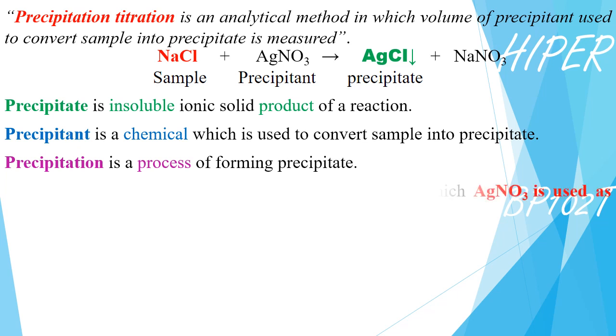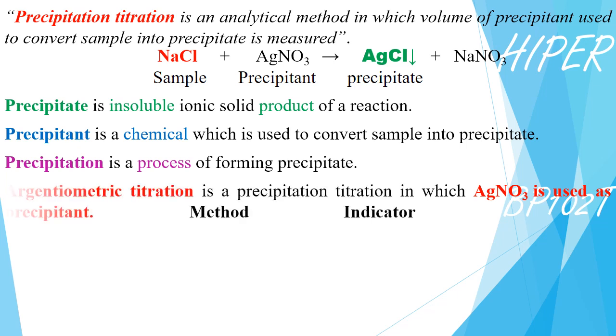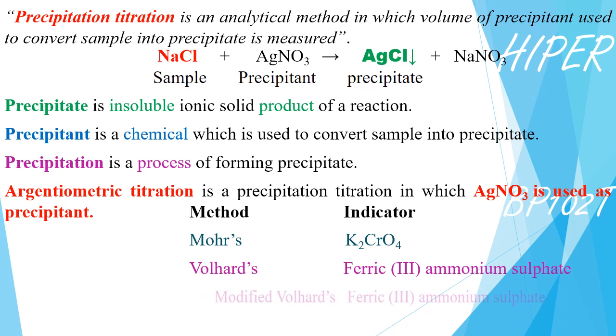And when we are using silver nitrate as a precipitant, this type of titrations are known as argentometric titrations. And based upon the indicator, it can be either Mohr's method, Volhard's method, in which ferric ammonium sulphate, also known as ferric alum, is used as an indicator, modified Volhard's method, where again ferric alum is used as indicator, or Fajan's method, in which fluorescein-like compounds, known as adsorption indicators, are used.